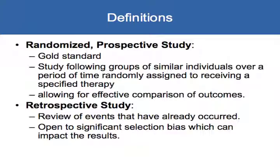Retrospective studies look back at events that have already occurred — patients received a therapy because their clinician felt it was appropriate, and then we compare outcomes of those who received it versus those who did not. As you can imagine, that's open to significant selection bias, where physicians are selecting patients they think will benefit. So these are mainly hypothesis-generating studies that help develop clinical trials, but not things we should be practicing standards off of.